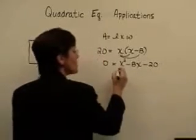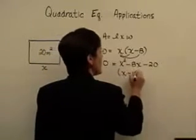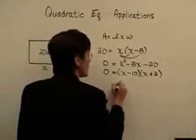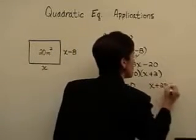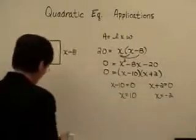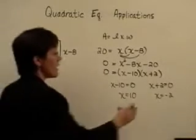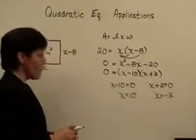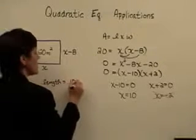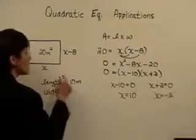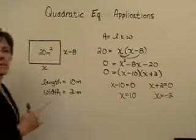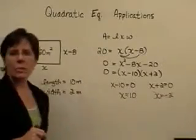I'm fairly certain this factors into x minus 10 times x plus 2. Using the zero product rule, I set each factor equal to zero and solve: x equals 10, and x equals negative 2. Please remember you're looking for the length and width of a rectangle, so a negative value is not valid. The length is equal to 10 meters. The width, which is x minus 8, or 10 minus 8, equals 2 meters. Check: 10 times 2 equals 20 square meters. And it is.